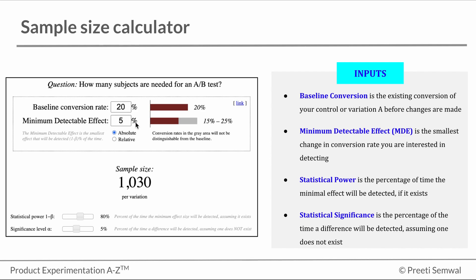So the MDE of 5% basically means that if the conversion is lower than 15% or higher than 25%, then we want to be able to detect it 80% of the time with a probability of making a type 1 error 5% of the time.